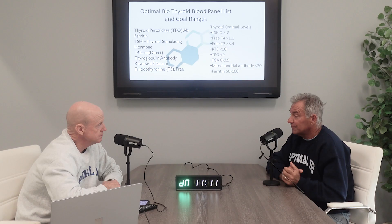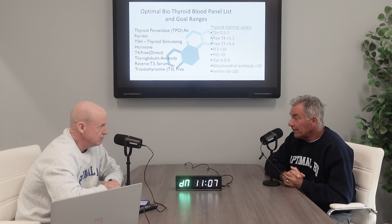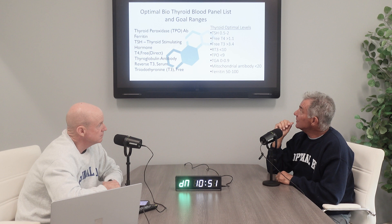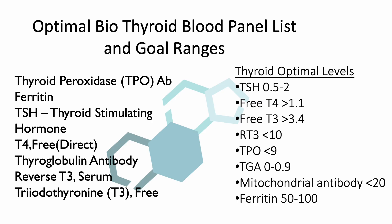If somebody has Hashimoto's, what would their numbers look like? Hashimoto's is a hypothyroid condition, so the TSH would be higher — the higher the TSH, the more the brain is trying to turn the thyroid on, meaning the lower it's working. You'd also see the T4 and T3 be low, so the thyroid gland itself is underperforming while the brain signal is high.